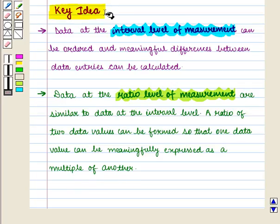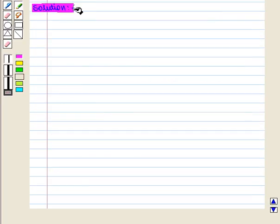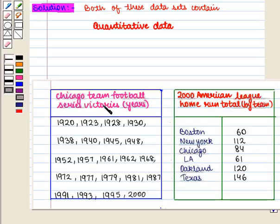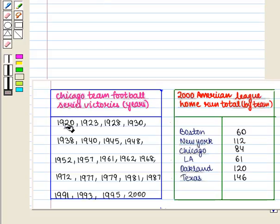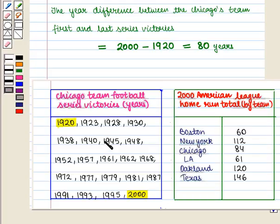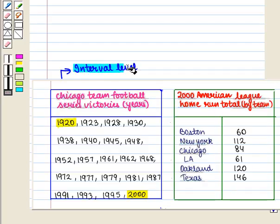With this key idea we move on to the solution. In this question both of the data sets contain quantitative data. Now consider the years of the Chicago team football series victories. It makes sense to find differences between specific years. For example, the year difference between the Chicago team's first and last series victories will be 2000 minus 1920, which equals 80 years. But it does not make sense to say that one year is a multiple of another. So these data are at the interval level.